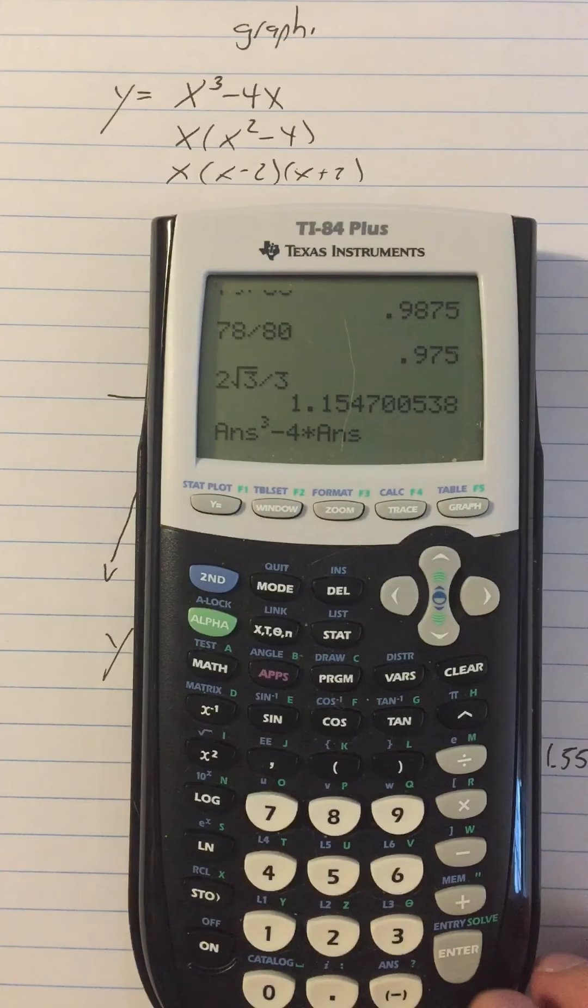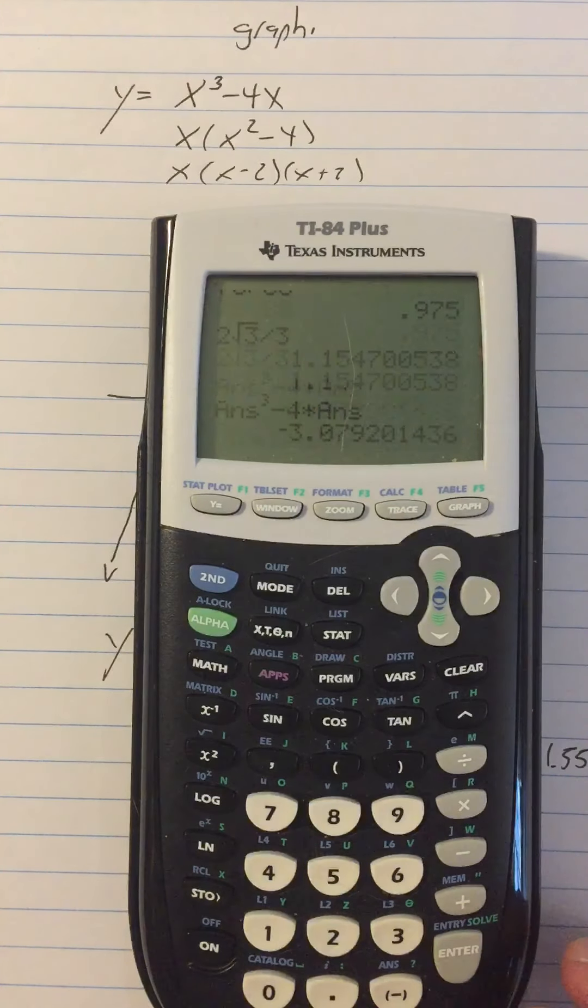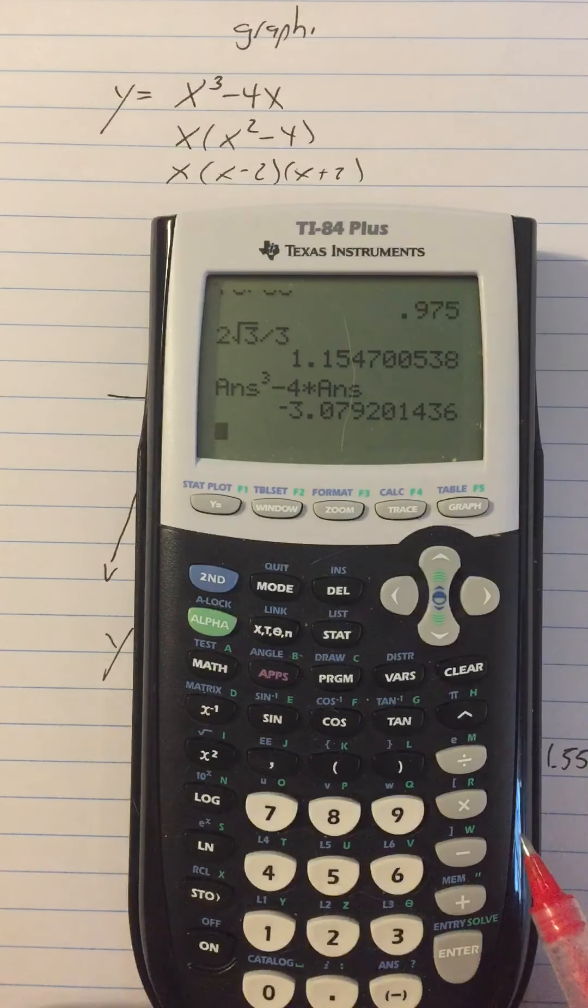To the power of 3 minus 4 times. I don't know if I need the times here, but I'm just going to put it anyway. 4 times whatever my answer was. And I get negative 3.079.